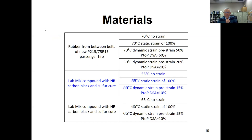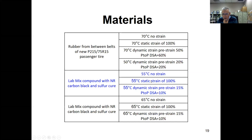We used natural rubber conventional sulfur cure with the following aging conditions: 70°C no strain, 70°C static strain at 100% elongation, 70°C dynamic strain with peak-to-peak amplitude 60%. Also 50°C dynamic strain at 20% amplitude, 55°C no strain, 55°C static strain at 100% elongation, 55°C dynamic strain at 10% amplitude, 65°C no strain, 65°C static strain at 100% elongation, and 65°C dynamic strain at 10% amplitude.